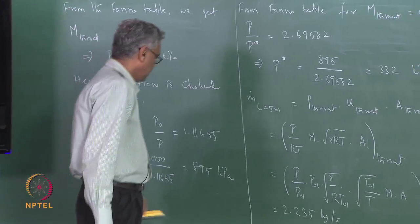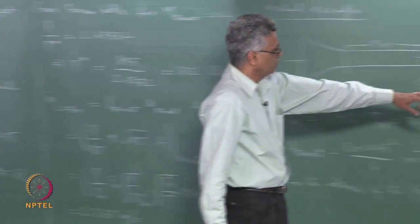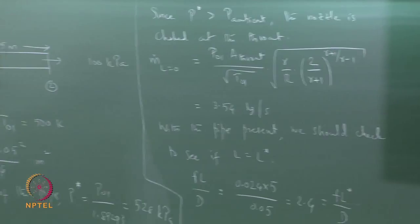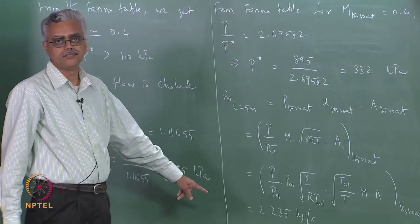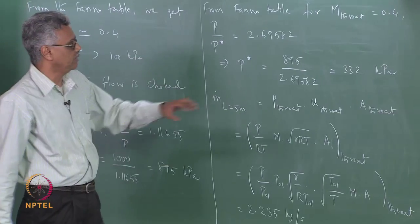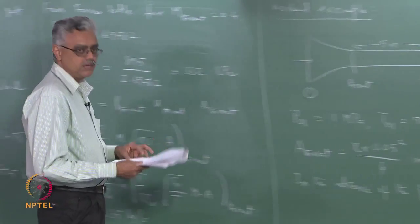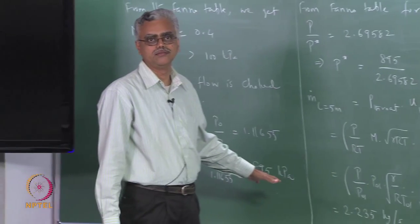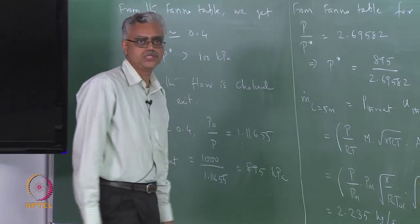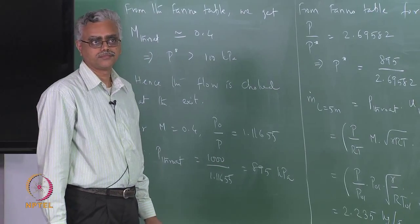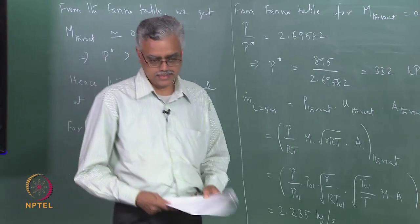The mass flow rate due to the duct has reduced from 3.54 kg/s to 2.235 kg/s. Adding 5 meters of pipe to the end of the nozzle reduces the mass flow rate by about 37%.